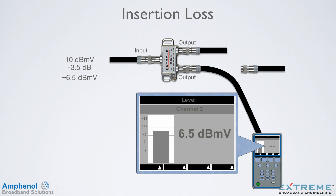When looking at the specifications of passive devices, the tolerance is normally plus or minus 1 dB, so that variance would be normal. If we were testing a three-way, we'd expect 3.5 dB of loss on one port and 7 dB on the other two. A four-way is 7 dB per port, and an eight-way is 11 dB per port.